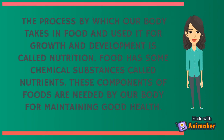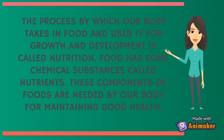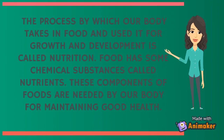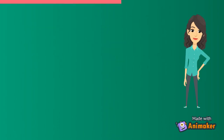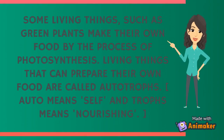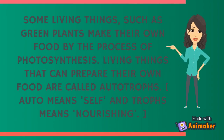Food has some chemical substances called nutrients. These components of food are needed by our body for maintaining good health. Some living things, such as green plants, make their own food by the process of photosynthesis. Living things that can prepare their own food are called autotrophs. Auto means self and trophs means nourishing.